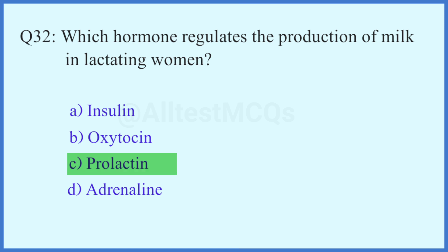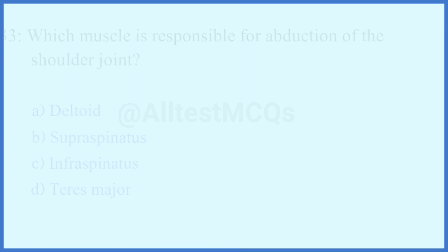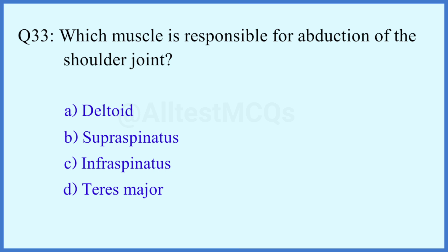Question number 33. Which muscle is responsible for abduction of the shoulder joint? The right answer is option A: Deltoid.